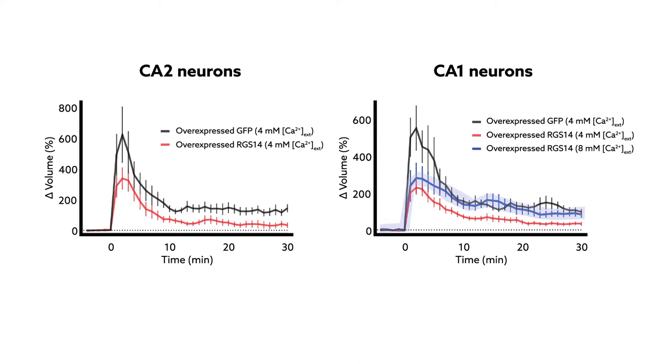Strikingly, increasing the extracellular concentration of calcium reversed the blockade, further supporting the idea that calcium signaling is central to RGS14's role in restricting structural plasticity of dendritic spines.